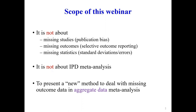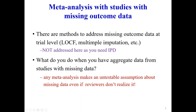I say relatively new because similar methods were suggested almost a decade ago by Ann White and Julian Higgins for binary outcomes. We have now extended the method to continuous outcomes and also to network meta-analysis, where you have more than two treatments compared.